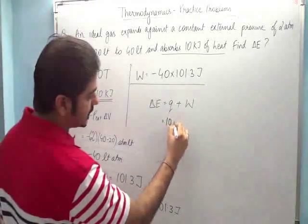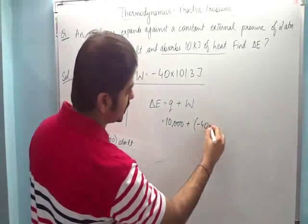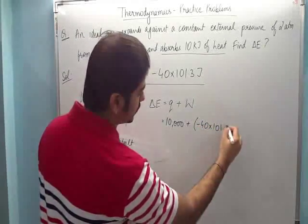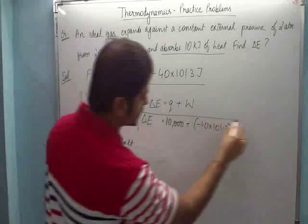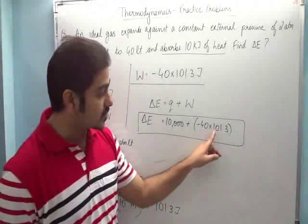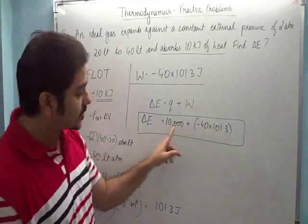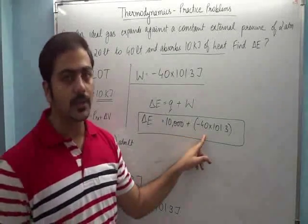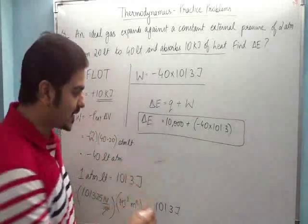So it's 10,000 plus work done which is minus 40 into 101.3. Delta E's value can be directly found by solving this expression. If I approximate and use 100 instead of 101, it comes to around 4000. So 10,000 minus 4000 gives approximately 6000, but slightly less. The exact answer is...